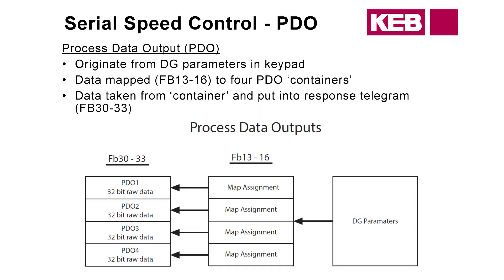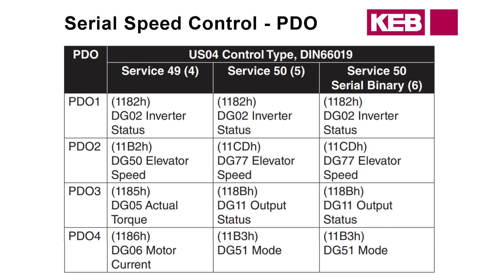Now the controller is looking for some stuff from the drive. It's going to originate in the DG parameters — those are diagnostic parameters, read-only, you cannot adjust them. Basically the same process as before but in reverse: they will be given their correct mapping assignment to which process data output they will be linked to, and ultimately go to the controller. Here are the default values for the PDOs: inverter status, so the controller knows what the inverter is doing; elevator speed; torque output; and motor current.